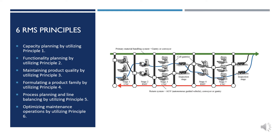Process planning and line balancing by utilizing principle five. A process plan specifies the components and operations needed to manufacture a work piece into a part or product. Process planning in RMS requires consideration of multiple product families or multiple product generations. Operations should be distributed among machines to balance the system according to principle five: maximize system productivity by reconfiguring operations and relocating tasks to machines.